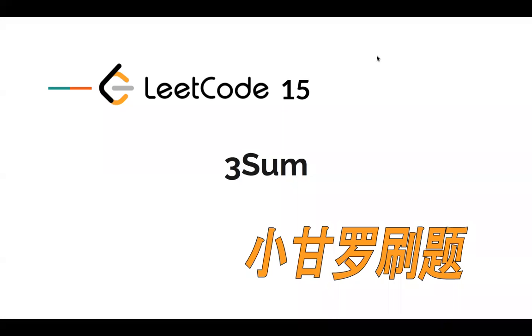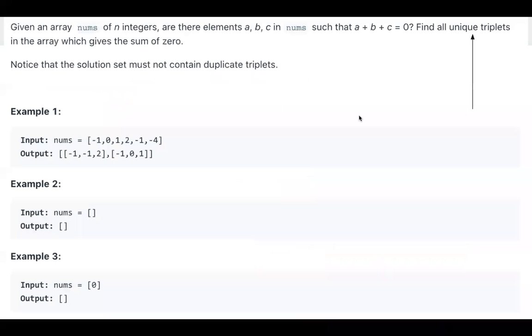Hello everyone, let's solve threesome today. So it's a very typical problem and the optimal solution is two-pointer plus sorting. Let's take a look at this problem. The problem is giving us an integer array and asks us to find all unique triplets in the array which give sum of zero.